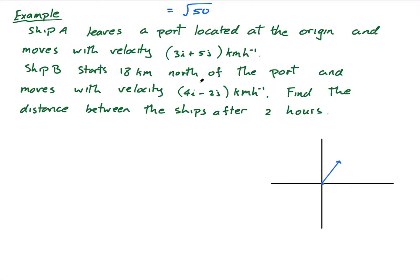And then Ship B starts 18 kilometers north. So he's starting up here somewhere, 18 kilometers north, so directly north, and he's moving at 4i minus 2j. So let's go 4 minus 2, something like that. So he's going that direction, he's going that direction. It says find the distance between the ships after 2 hours.